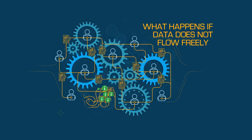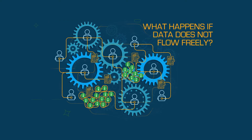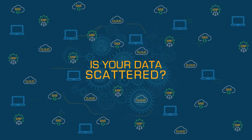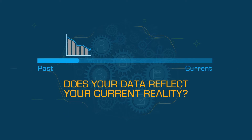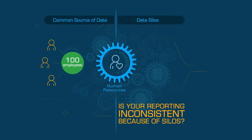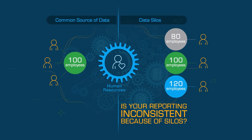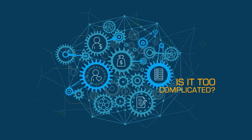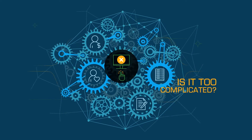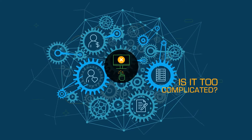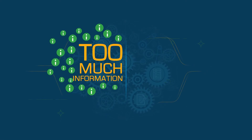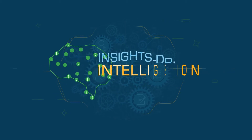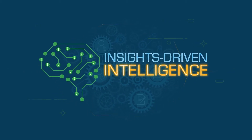So, what happens if data does not flow freely? Several issues. Data may be scattered across different sources. It is too old or irrelevant. Reporting may be inconsistent because people have access to limited data. It is tedious — you need to coordinate with too many teams and you don't have the option of self-service. Or, there's too much information and too little meaning. Unless information becomes insights-driven intelligence, it's of no value.